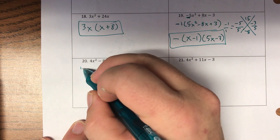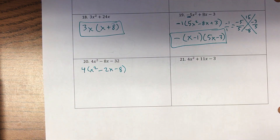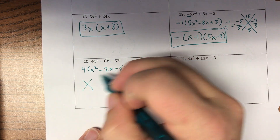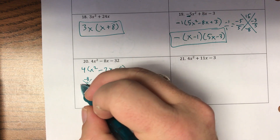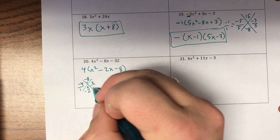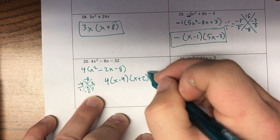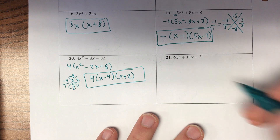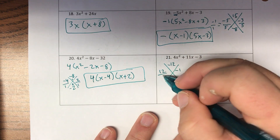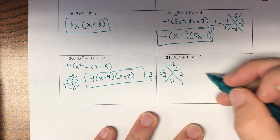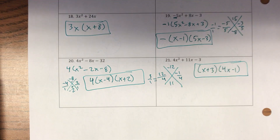Number twenty — take out a 4 first: 4(x² − 2x − 8). What multiplies to negative 8 and adds to negative 2? Negative 4 and positive 2. So: 4(x − 4)(x + 2). Last one — no GCF. What multiplies to negative 12 and adds to 11? That's 12 and negative 1, dividing by 4. So (x + 3)(4x − 1). And that's it — hope you're ready for this test.